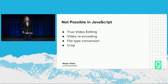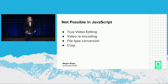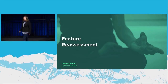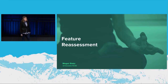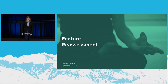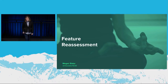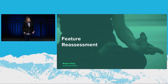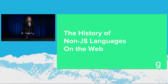That brings us to functionality that simply isn't possible in native JavaScript. Once you create that WebM file from your media recorder, you're done. There's no way to add a watermark or a filter after the fact. It's also not possible to re-encode the video. The media recorder API will give you a WebM, so if you wanted a GIF or an MP4, you can't do it with native functionality. At this point we went back to the client and recommended a server-side-only solution — video editing is memory-intensive and Chromebooks are not powerful machines. But ultimately the client asked us to move ahead with a client-side-only implementation.